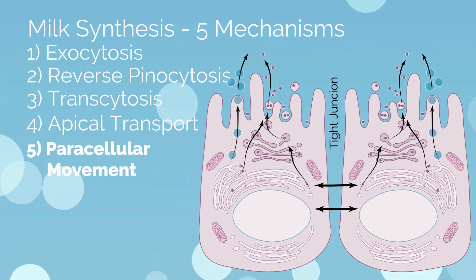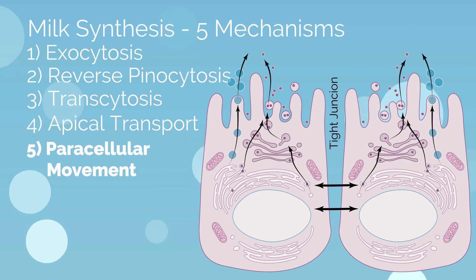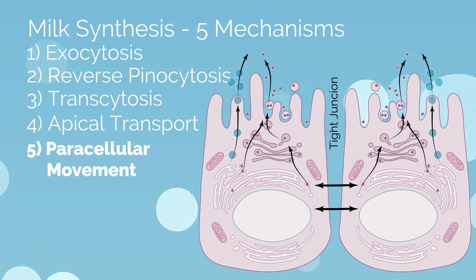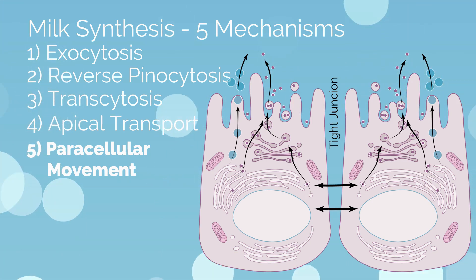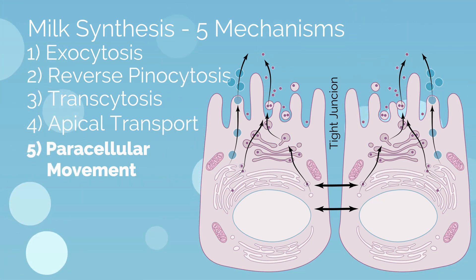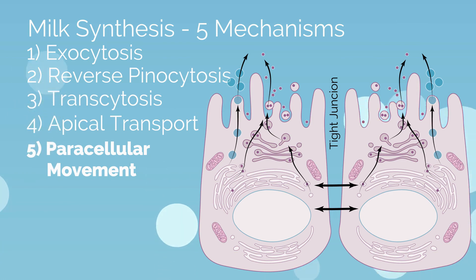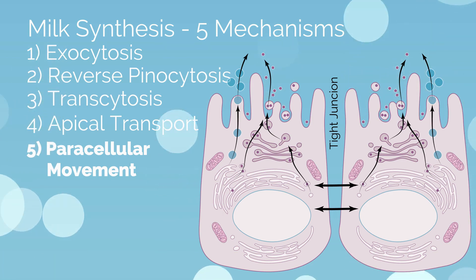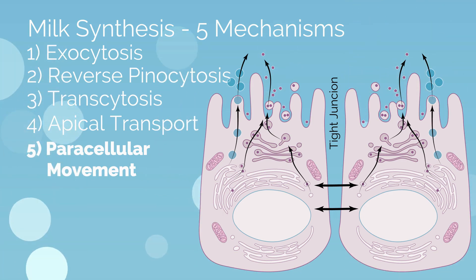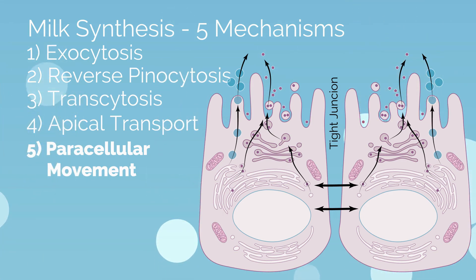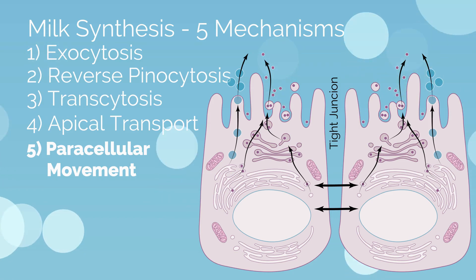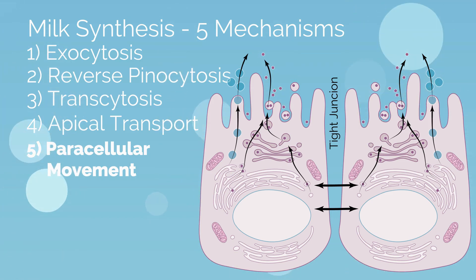Finally, in the fifth mechanism, paracellular movement allows components such as immune cells to move between alveolar cells across the tight junction. These tight junctions are more leaky during specific times such as pregnancy, the immediate postpartum period, and during mammary involution.